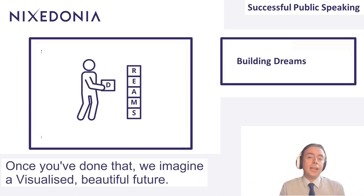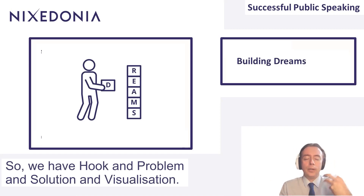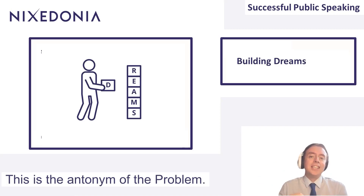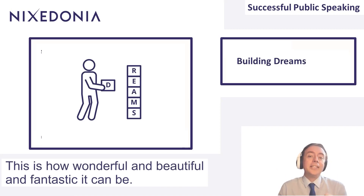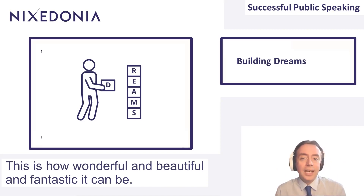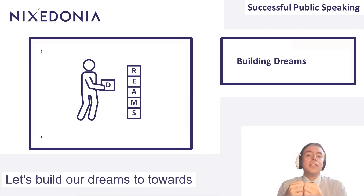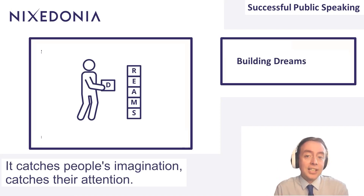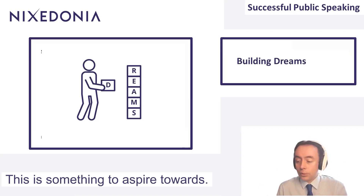Once you've done that, we imagine a visualized, beautiful future. So we have hook, problem, solution, and visualization. This is the antonym of the problem — this is how wonderful and beautiful and fantastic it can be. Let's build our dreams towards this aspirational future. It catches people's imagination, catches their attention. This is something to aspire towards.